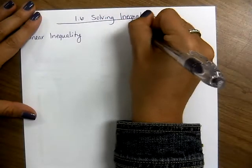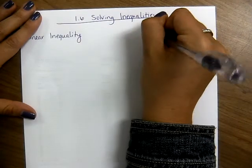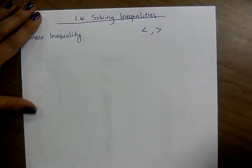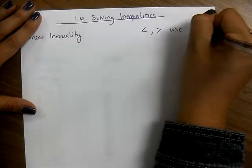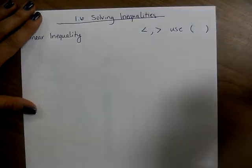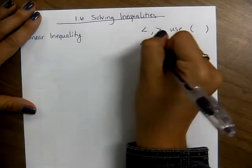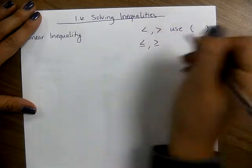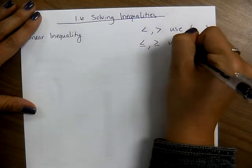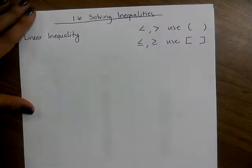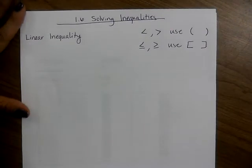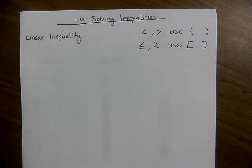When you solve an inequality, you write your answer in interval notation. So if you have a less than or a greater than, that would be having an open circle on the number line, so we're going to use parentheses for those. If you have less than or equal to, or greater than or equal to, that's where you would have a closed circle, so we would use brackets there.